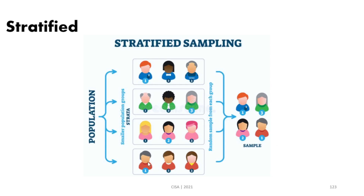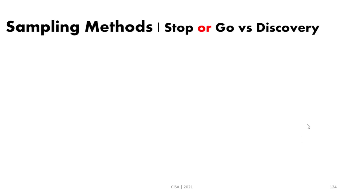Here is an example of stratified sampling. As we can see, we have different strata with different ages, and we select our samples from the different groups. We also have two additional sampling methods: stop-or-go and discovery sampling.